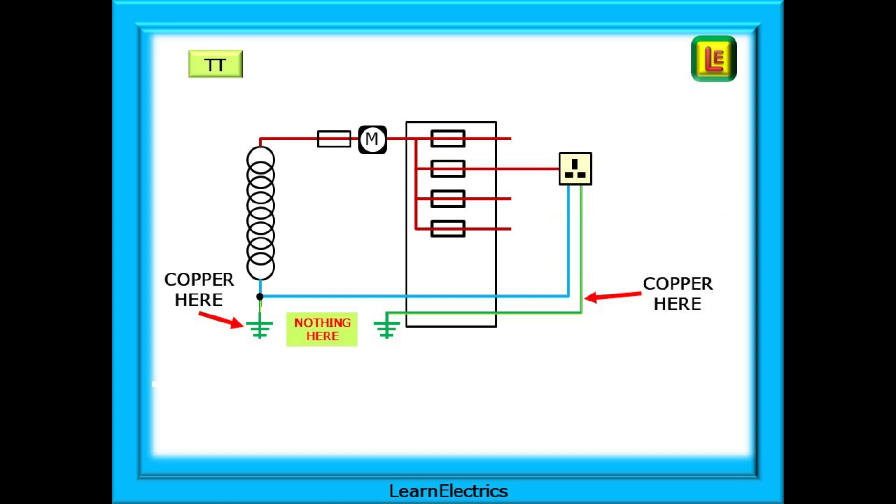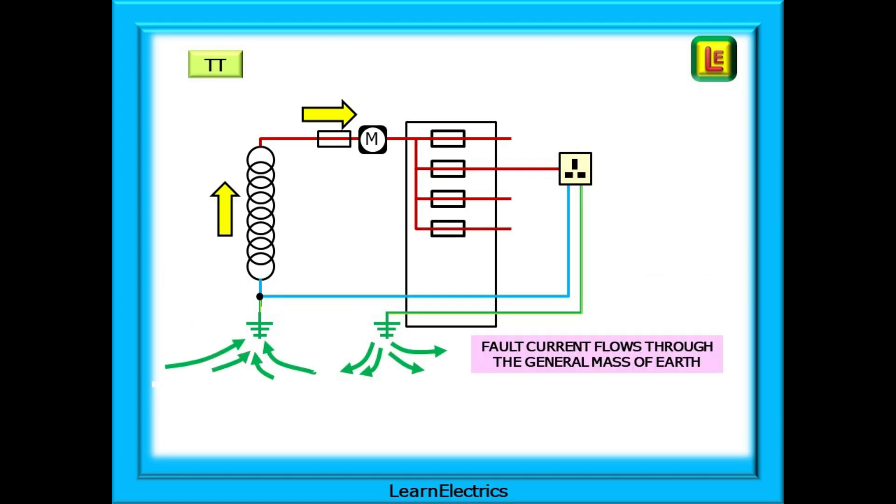Looking at the drawing for a TT system, it is very different to the other two systems. There is no metallic Earth connection between the supply transformer and the installation Earth. Having no metallic connection means that we are going to get a higher ZE reading. With no metallic connection, what happens to any fault current? It simply flows into the general mass of Earth. Because some electrons have flowed into the Earth at the installation Earth rod, there is now an opportunity for other electrons to flow into the Earth rod at the supply transformer. They will be energised, they will flow along the phase wire, through the fuses, and blow the fuses, making the installation safe, if you can get enough current to flow, that is.